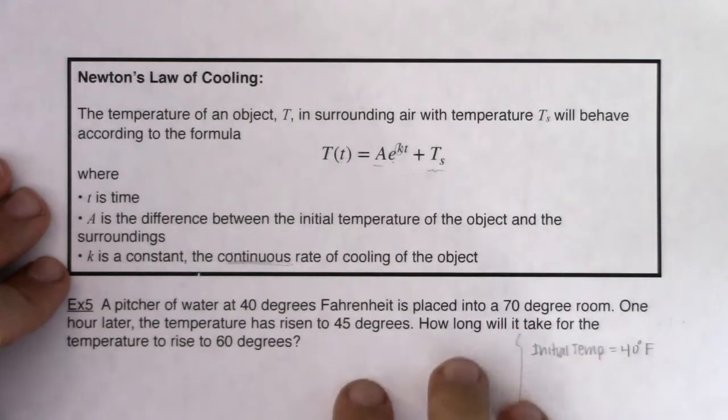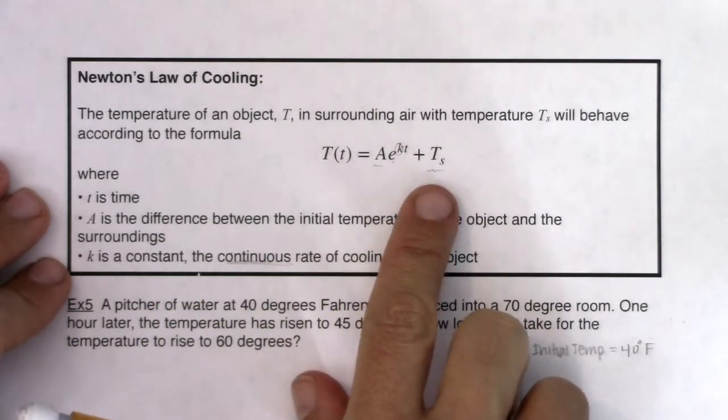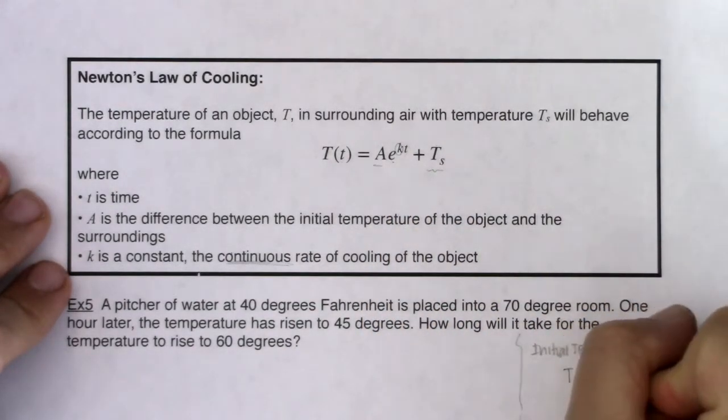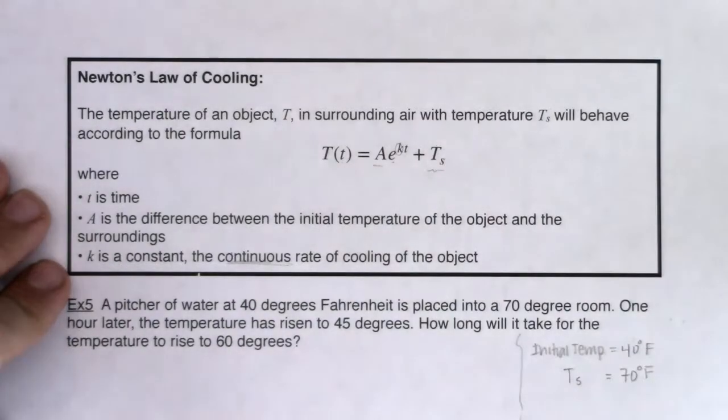I also see that the surrounding temperature, right, the room temperature is 70 degrees. And T sub s is just that. T sub s is the temperature of the surrounding air. So I know that T sub s is equal to 70 degrees Fahrenheit.